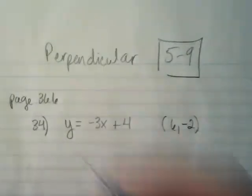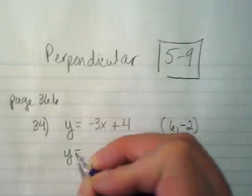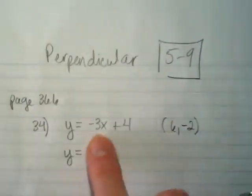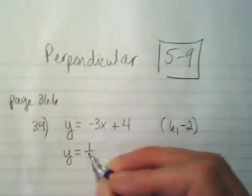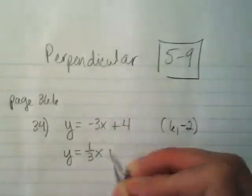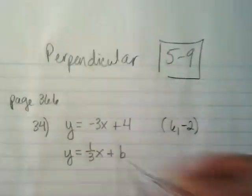So knowing that, we can start this equation by saying what would the slope be for an equation that's perpendicular to this one. The negative reciprocal would be what? 1 over 3. 1 over 3x plus wherever it's going to cross the y-intercept, and we don't know what that is right now.